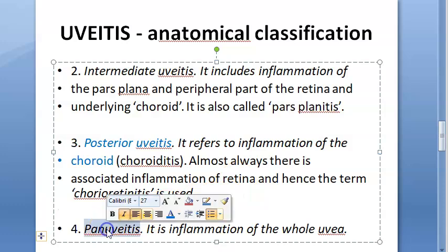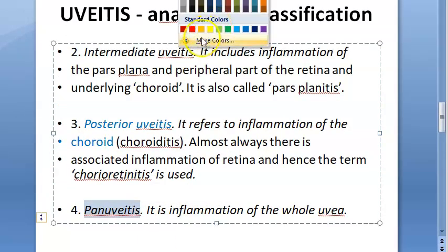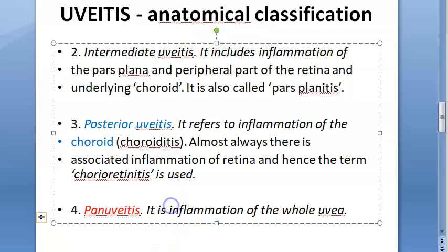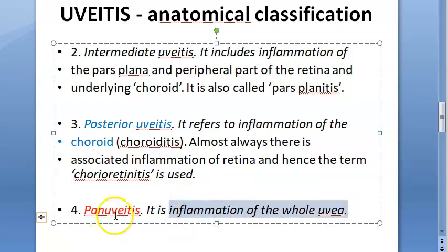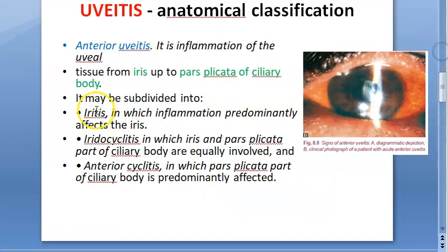There is one more term: pan uveitis. Pan uveitis means everything is involved — anterior, posterior, and intermediate — so the whole uvea is affected. Examples include sympathetic ophthalmitis and Vogt-Koyanagi-Harada's disease. These are all pan uveitis conditions where all parts of the uvea are involved.